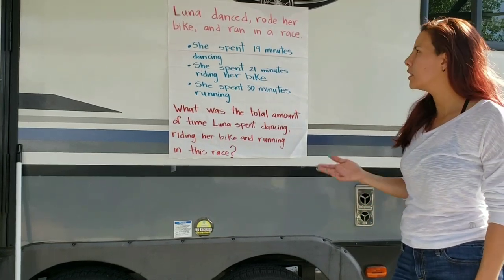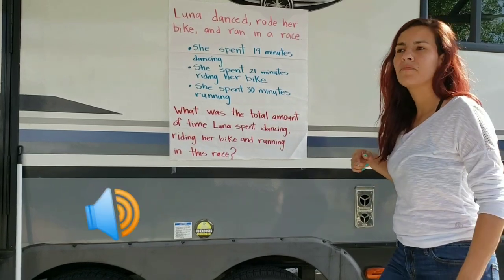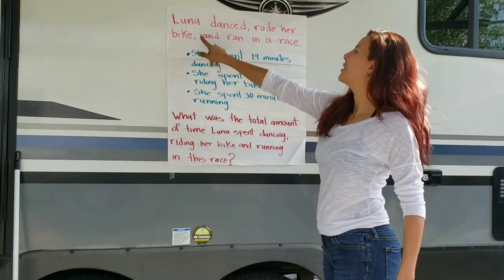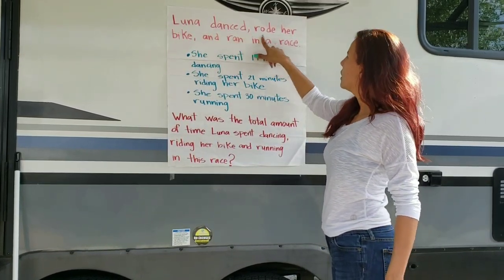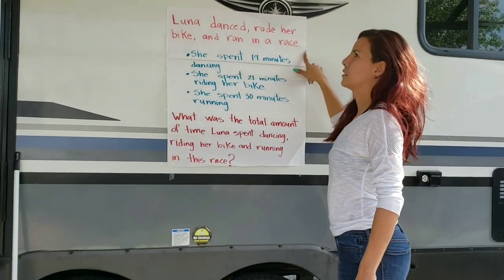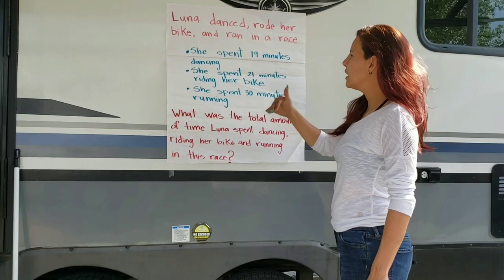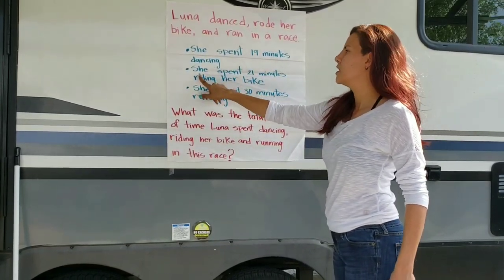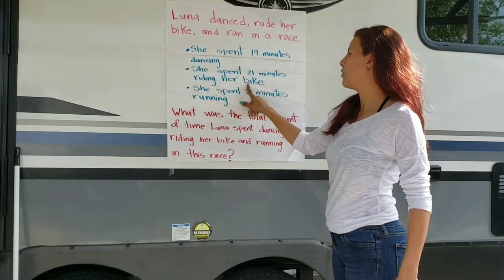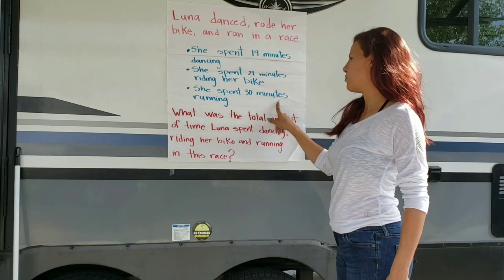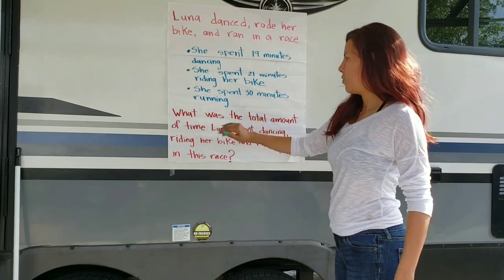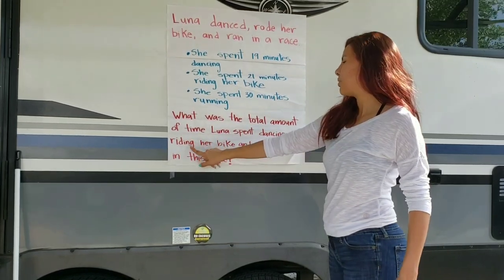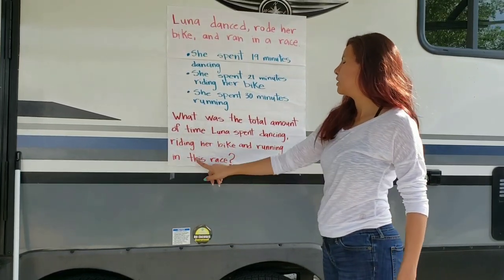Let's read it carefully and many times. The first time, we read it and try to understand it. Then we try to imagine what happened in our mind. Luna danced, rode her bike, and ran in a race. She spent 19 minutes dancing. She spent 21 minutes riding her bike. And she spent 30 minutes running. Now, the question: what was the total amount of time Luna spent dancing, riding her bike, and running this race?